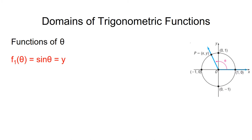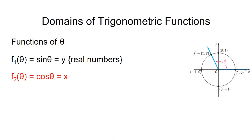When we consider the unit circle shown here in the figure, we see that the sine of theta is equal to y. There are no restrictions on what value theta can take on, so the domain of sine theta is equal to the set of real numbers. Looking at the unit circle again, we can see that cosine of theta is equal to x. Again, there are no restrictions on the value of theta, so the domain of cosine of theta is also equal to the set of real numbers.